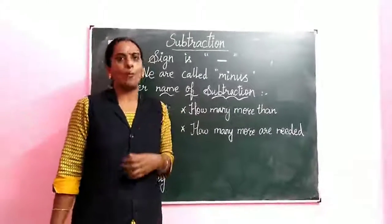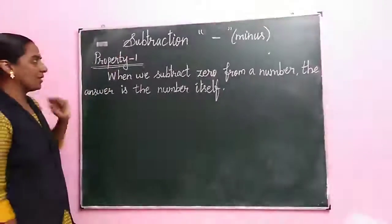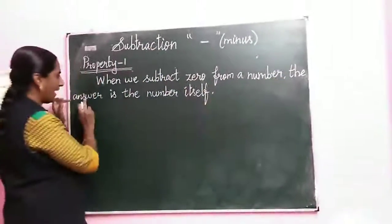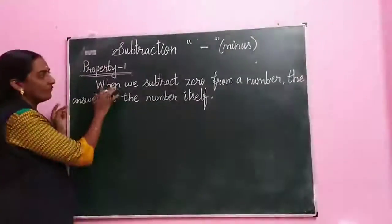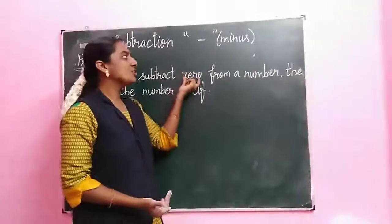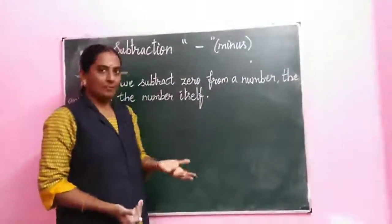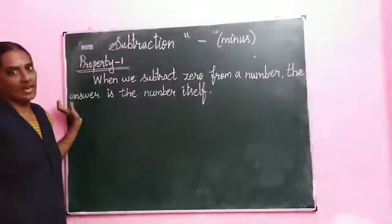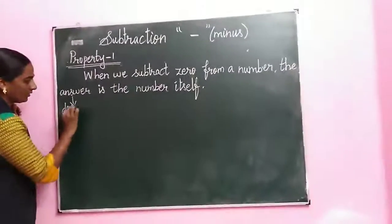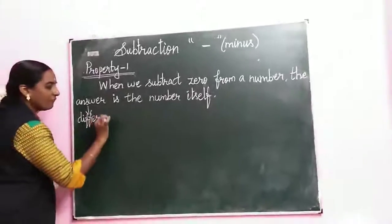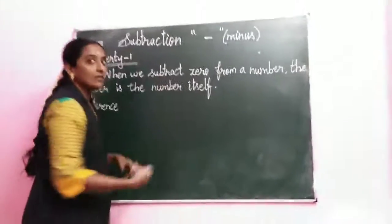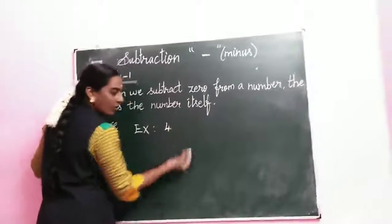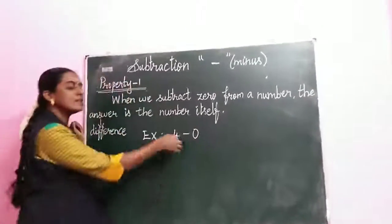Now we are going to learn some properties of subtraction. First property — it's easy, very easy. When we subtract 0 from a number, the answer is the number itself. The answer is also called the difference. So, when we subtract 0 from any number, the answer is the same number.